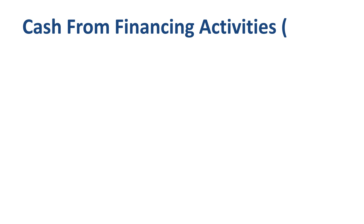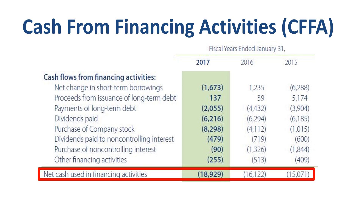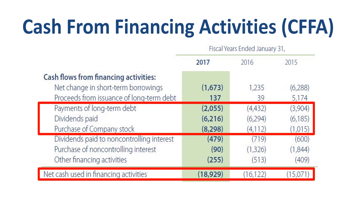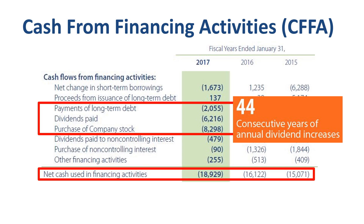The third section is cash from financing activities, a net cash outflow of $18.9 billion. The largest line item in 2017 was $8.3 billion for Walmart buying back its own shares — well above prior-year buyback levels. A recurring outflow of $6.2 billion is the dividend payment: $2.00 per common share in FY17, up from $1.96 in FY16 and $1.92 in FY15. In FY18 Walmart raises its dividend to $2.04 per share, paid in quarterly installments of $0.51 — marking the 44th consecutive year of annual dividend increases. Also notable is the repayment of $2.1 billion in long-term debt, reducing the balance sheet total to $36 billion.